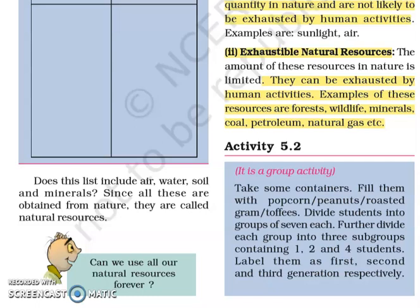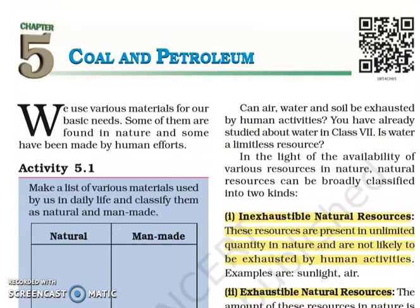Now the question comes: can we use all natural resources forever? Can air, water and soil be exhausted by human activities? You have already studied about water in class 7. Is water a limitless resource? Natural resources can be broadly classified into two types. Number 1 is Inexhaustible natural resources — these resources are present in unlimited quantity in nature and are not likely to be exhausted by human activities. Examples are sunlight, air, and even water.